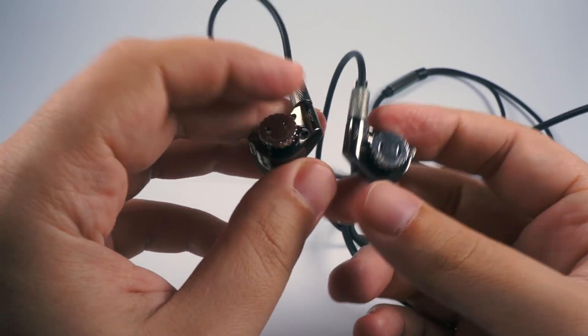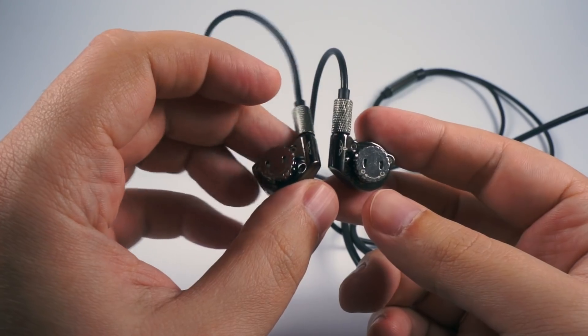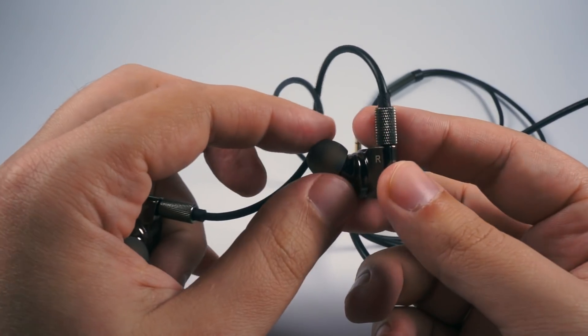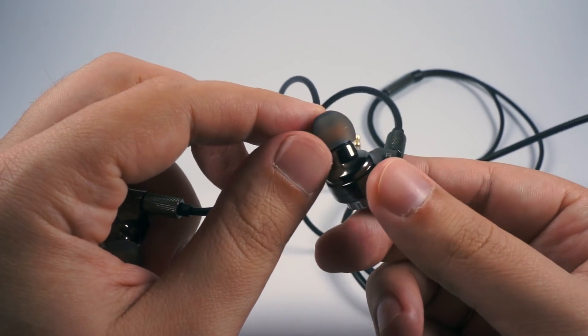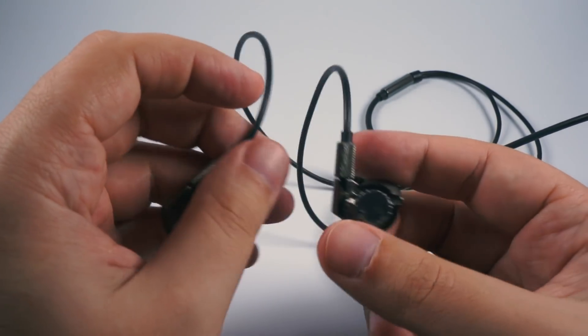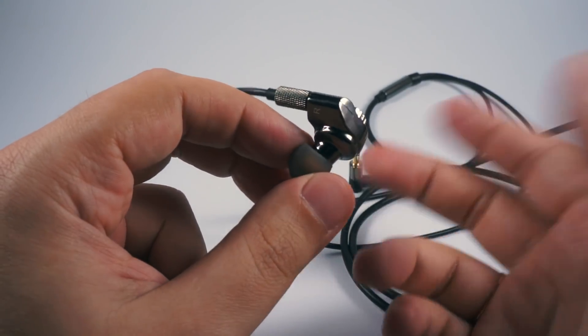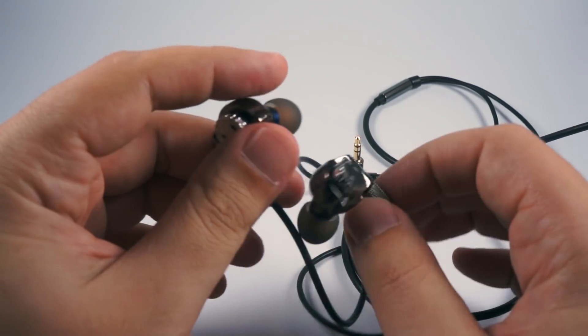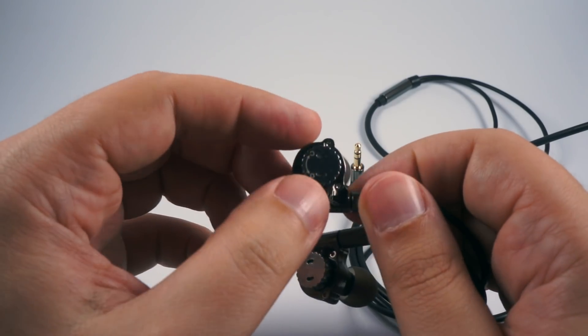And of course about the sound. First thing that you will need to do is to give them some good burning about 30 hours, maybe a bit more but 30 hours is probably enough. Second thing is to find the proper tips that will provide you the best possible seal. Sometimes I'm using them with the biggest single flange silicone tips and sometimes with spin fits which suit them really nicely. And third, you will need to find the proper filters to get the best possible sound. I've tried different options but ended with this blue version and in open position.